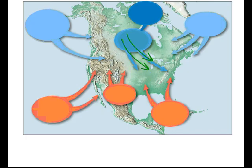That air mass from central Canada is going to be a little bit cooler. And since it's over land, it's going to be somewhat dry — not very moist. Compared to that, we have another air mass down in the Caribbean Sea. If that air mass moves into our area, that air tends to be a little bit warmer, and since it's formed over water, it's also going to be a lot more humid.